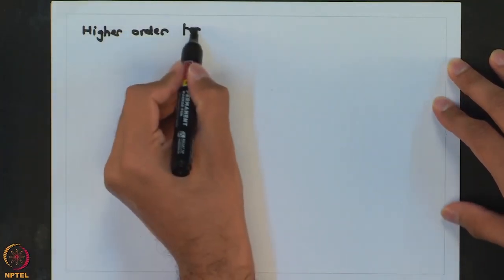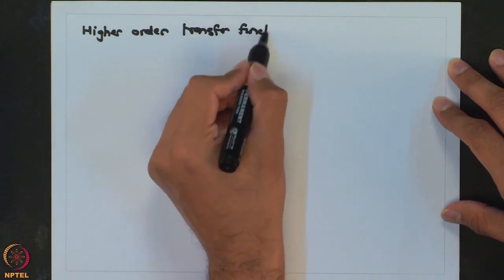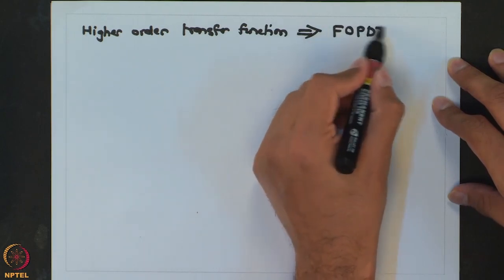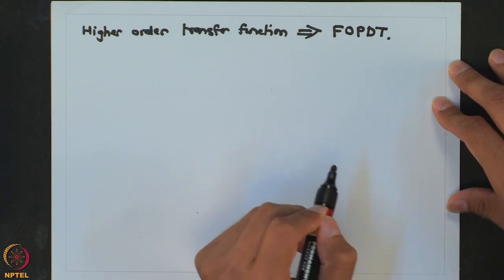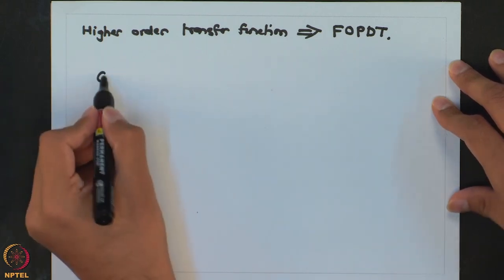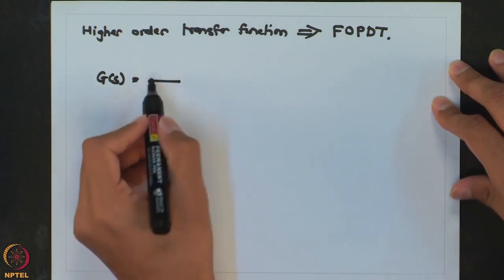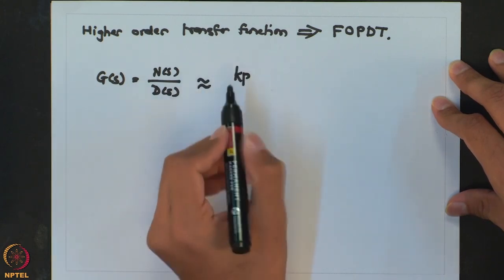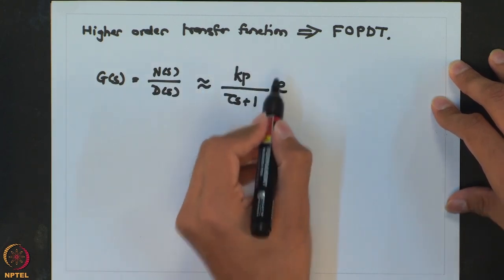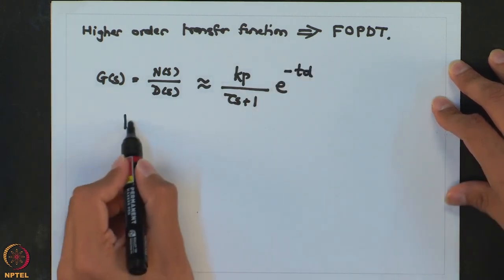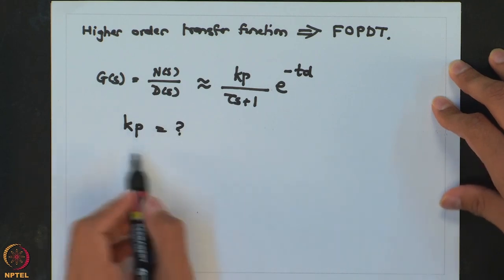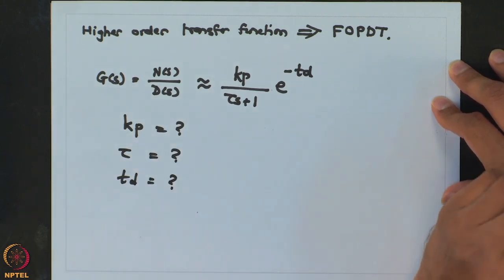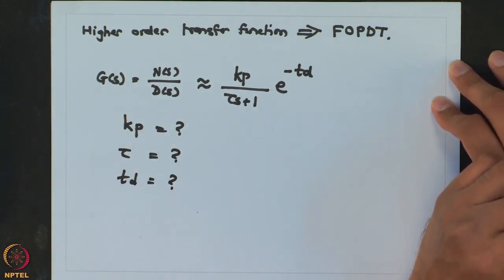What we have is a higher order transfer function which we want to approximate into a first order plus dead time model, essentially converting it as Kp over (tau·s + 1) · e^(−Td·s). We need three unknowns: what is the ultimate gain, what is the time constant, and what is the dead time, given the fact that we have the transfer function for this process.